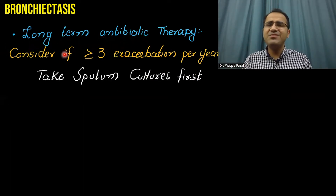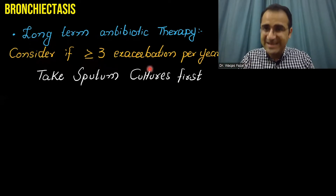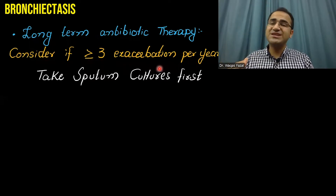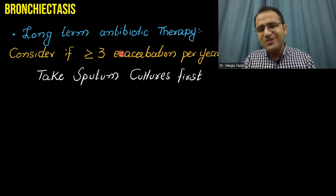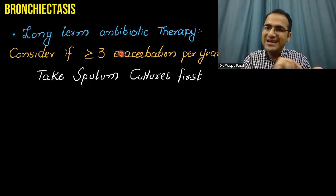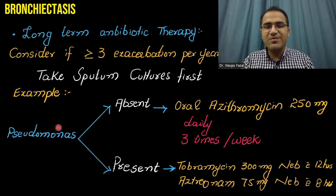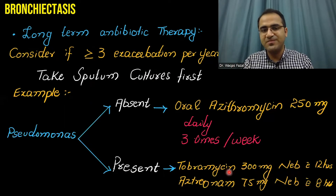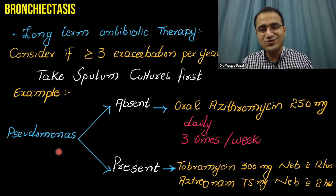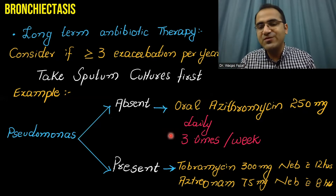Long-term antibiotic therapy is considered only if the patient gets three or more exacerbations per year. You take sputum cultures first, then start antibiotic therapy so you can tailor it when culture reports return. Empiric therapy is based on the presence or absence of Pseudomonas. If Pseudomonas is suspected, give nebulized tobramycin and aztreonam every 12-hourly and 8-hourly. If Pseudomonas is absent, oral azithromycin 250 mg daily or three times per week can be used.